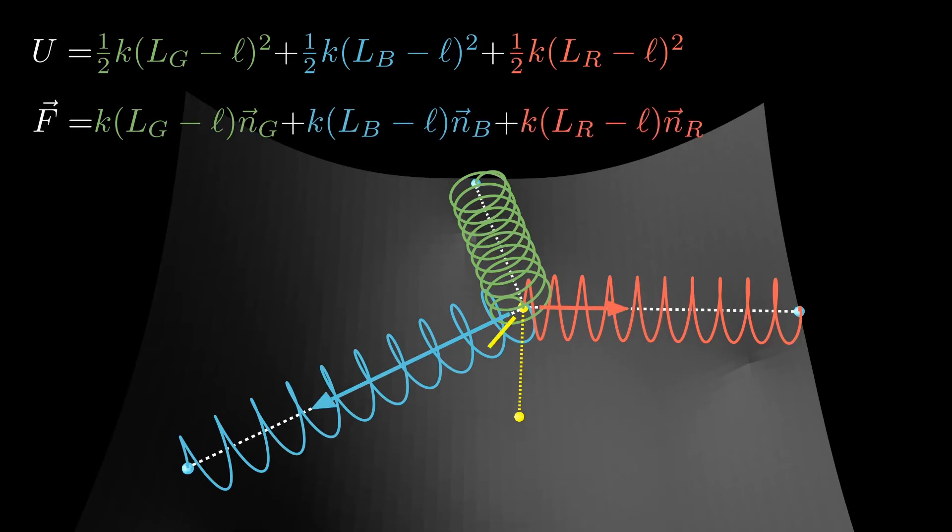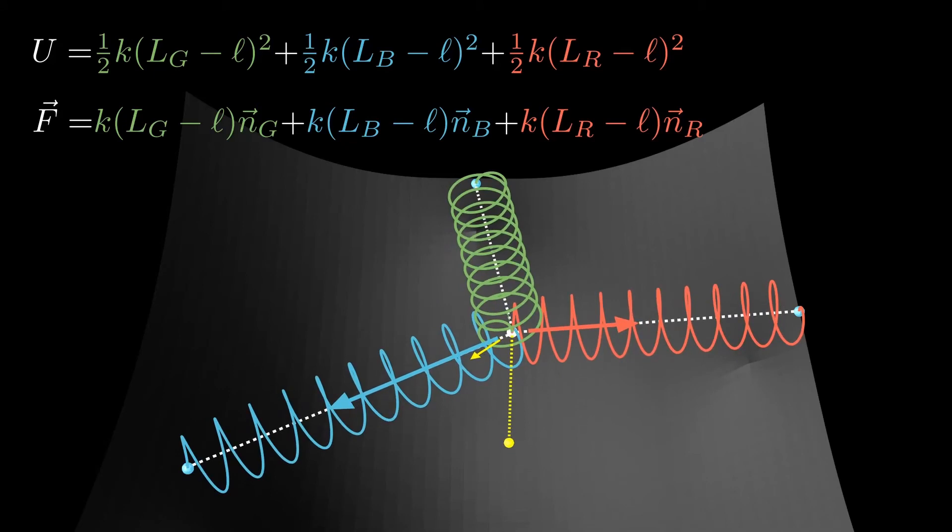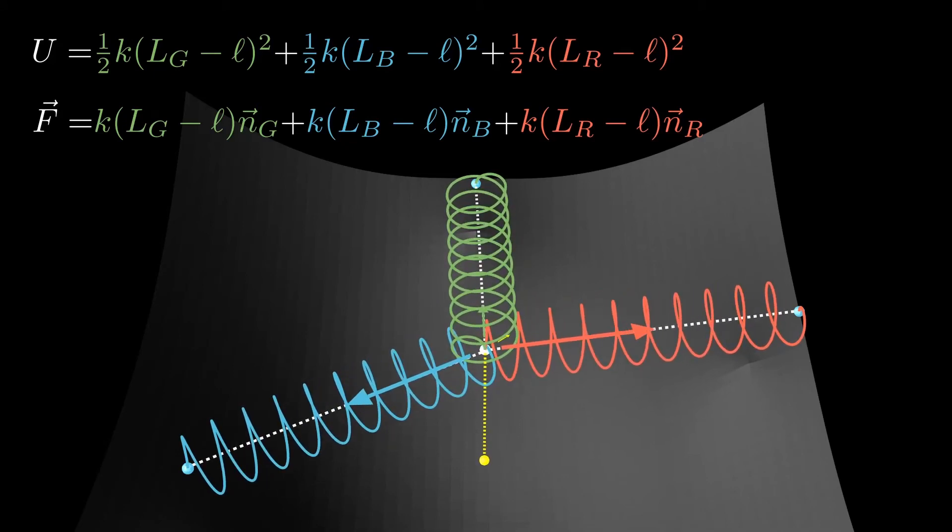Drawing in the forces for each spring, their combined force will always point in the direction that decreases the total energy. Following this force, you reach the minimum of the potential precisely when the total force adds up to zero.